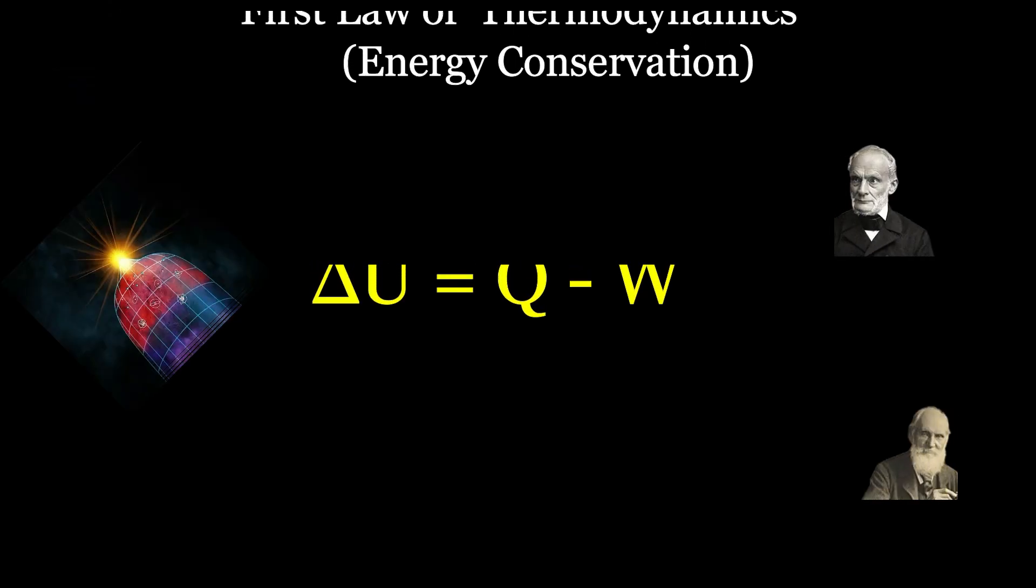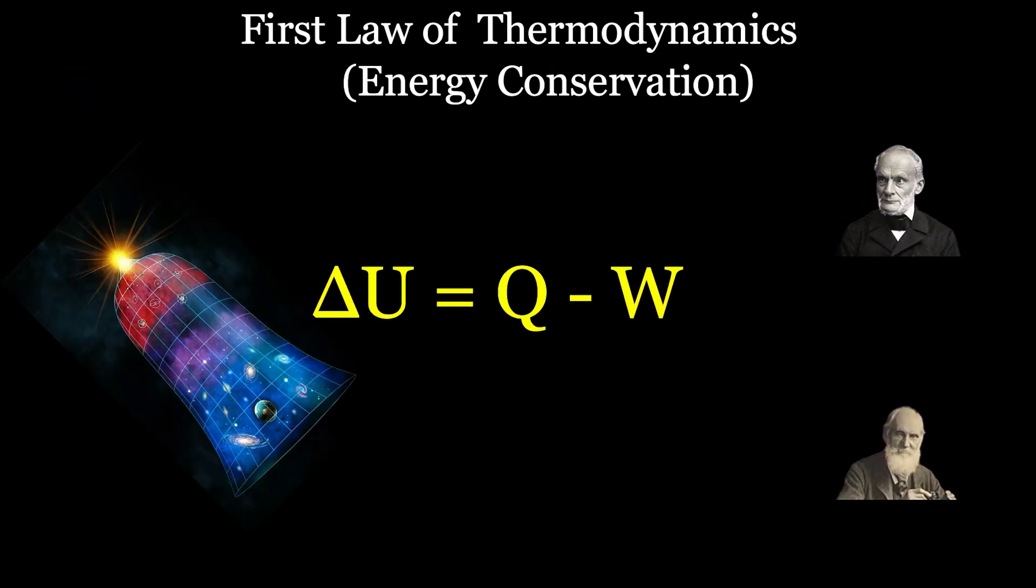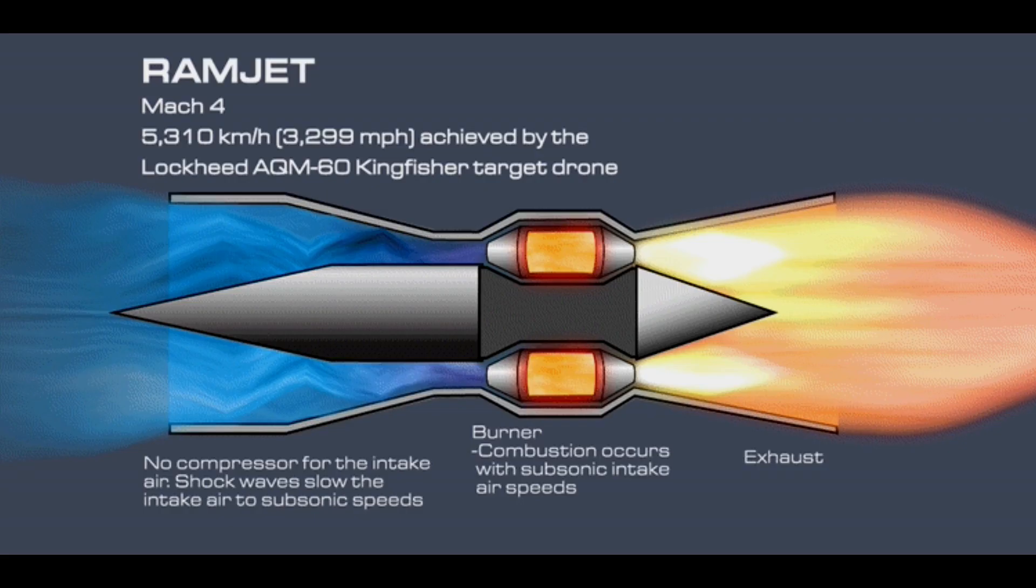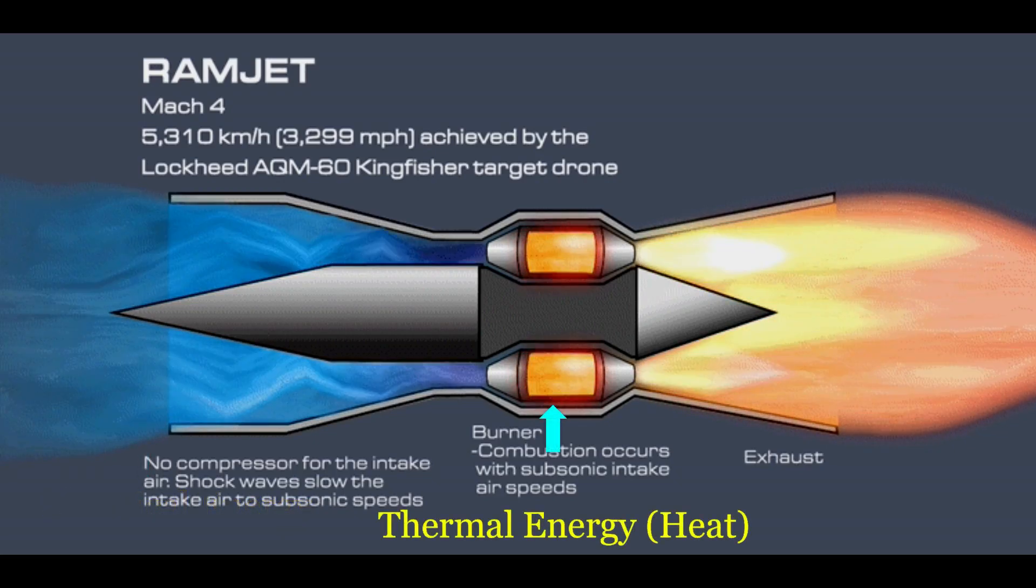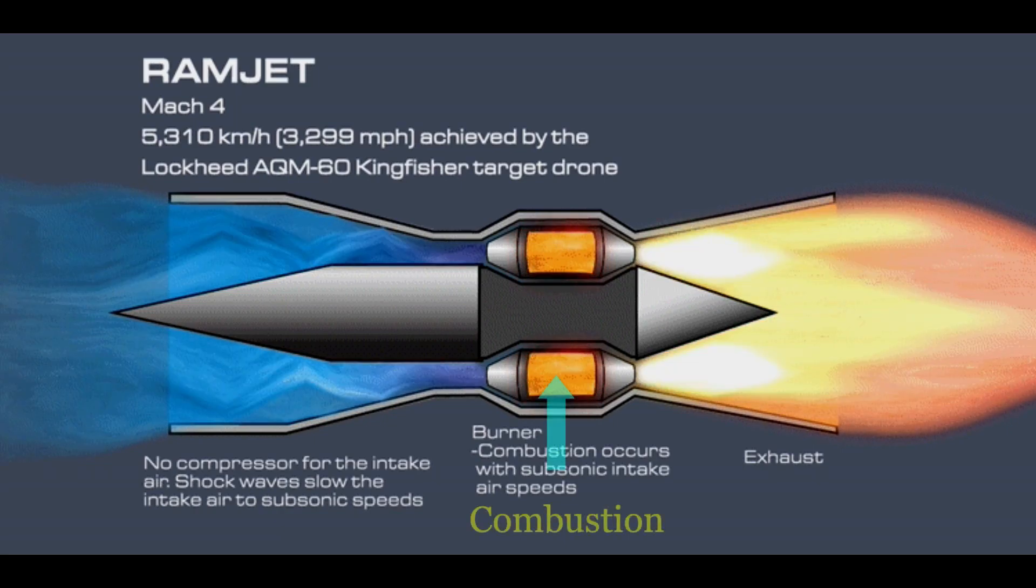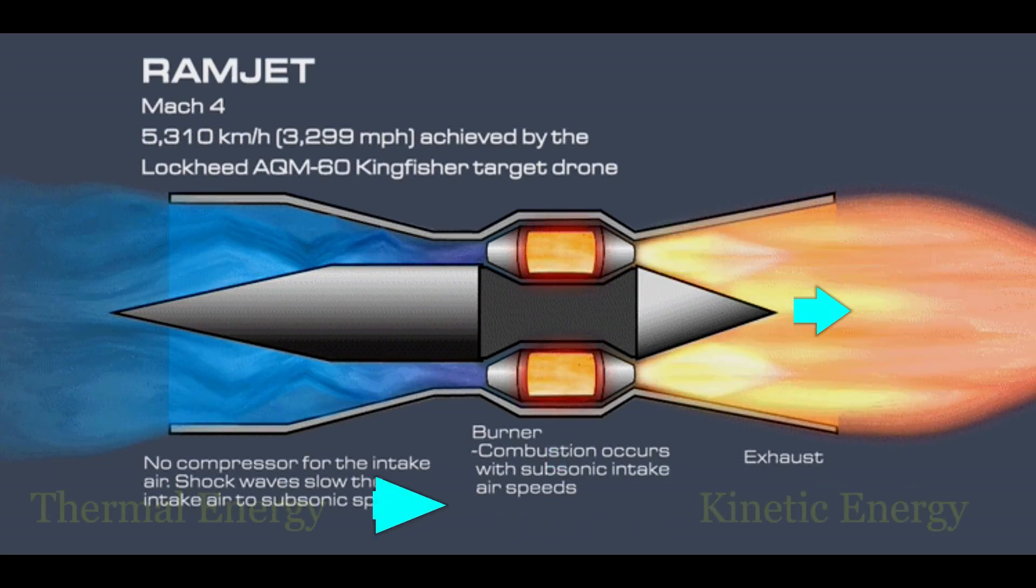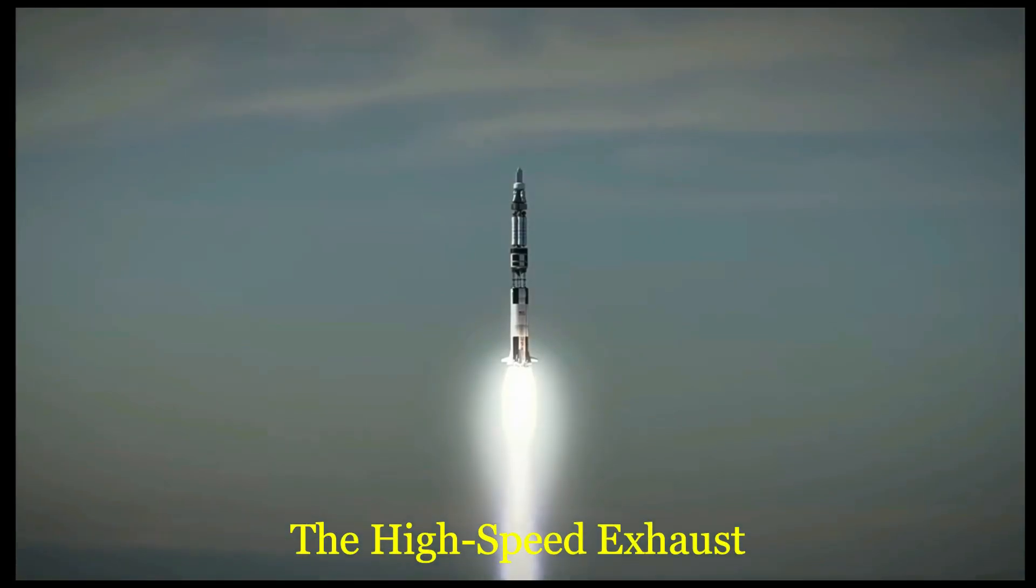First law of thermodynamics, energy conservation: This law states that energy can neither be created nor destroyed, only transformed from one form to another. In a rocket engine, the chemical energy stored in the propellant is converted into thermal energy, heat, during combustion. This hot gas then expands through the nozzle, converting thermal energy into kinetic energy, the high-speed exhaust.